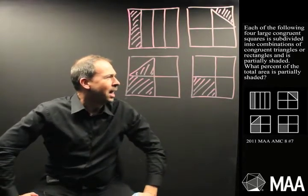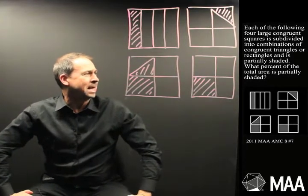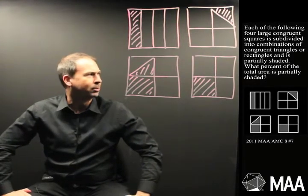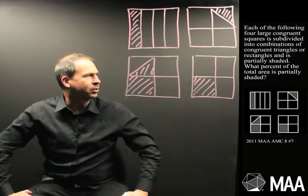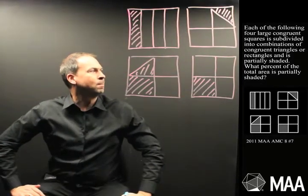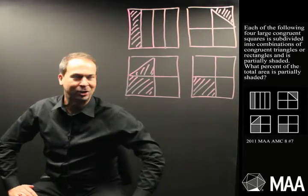So what's the question? What percent of the total area is partially shaded? Hang on, I just felt like I said the same things multiple times. Each of the four large congruent squares is subdivided into different shapes and is partially shaded. What percent of the total area is partially shaded?